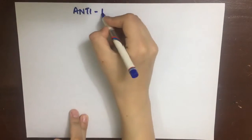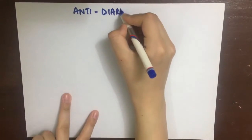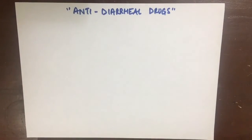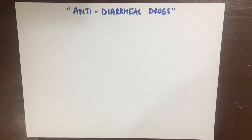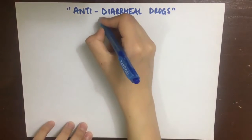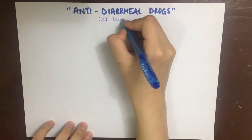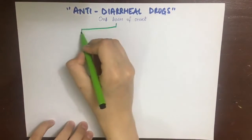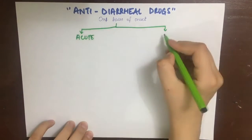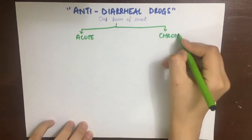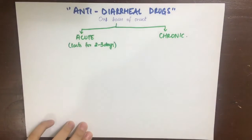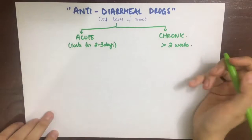Anti-diarrheal drugs. Diarrhea is basically the passage of unusually loose or watery stools at least three or more times in 24 hours. On the basis of onset, diarrhea is divided into acute and chronic diarrhea. The acute form lasts for about two to three days, while the chronic form can last for more than two weeks.